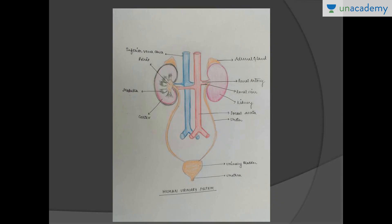Let us take a look at this simple diagram of all the organs present in the human excretory system. These two are the kidneys, and these are the adrenal glands above them — the adrenal glands are not a part of the excretory system.